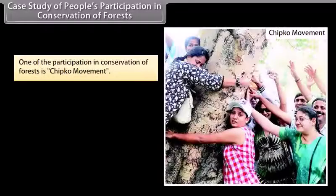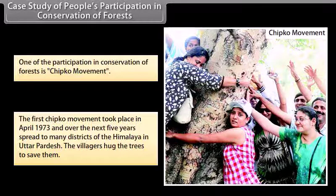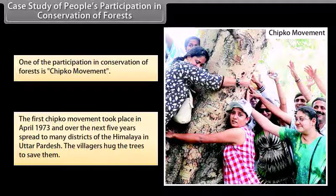Case study of people's participation in conservation of forests: one example is the Chipko movement. The first Chipko movement took place in April 1973, and over the next five years it spread to many districts of Himalaya in Uttar Pradesh. The villagers hugged the trees to save them.